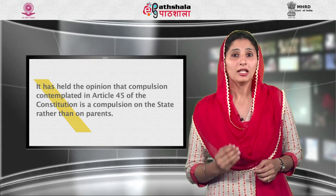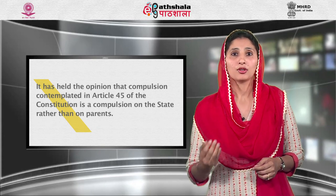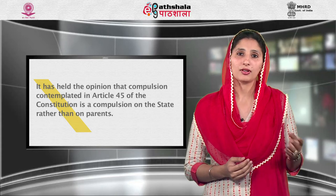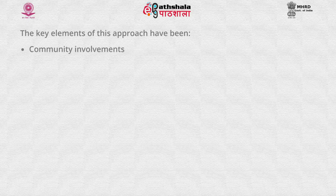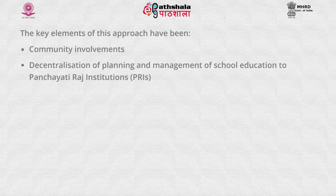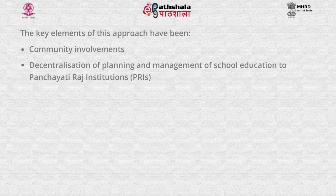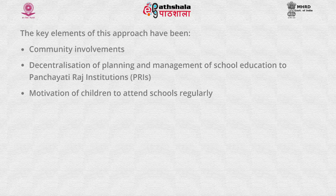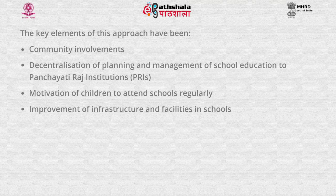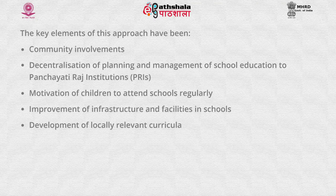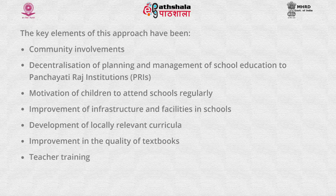The act needed to be seriously amended and passed. The compulsory education legislation as enacted in 14 states and 4 union territories has remained unenforced due to various socio-economic and cultural factors as well as administrative and financial constraints. The government of India has not enacted any central legislation in this regard. It has held the opinion that compulsion contemplated in Article 45 is a compulsion on the state rather than on parents, advocating a consensual approach. The key elements of this approach include community involvement, decentralization of planning and management to Panchayati Raj institutions, motivation of children, improvement of infrastructure, development of locally relevant curricula, improvement in quality of textbooks, teacher training and child-centered learning.